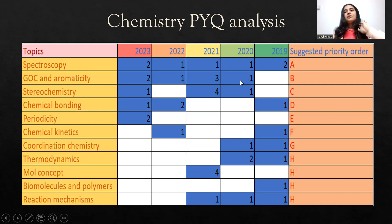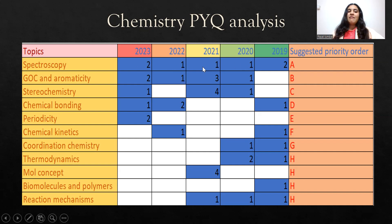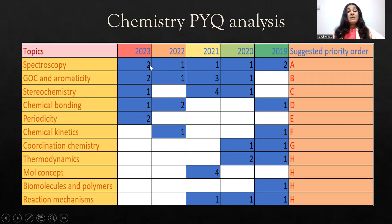In 2022 one question from spectroscopy was asked, and in 2021 similarly. We can see a continuous trend — in every year's IIT JAM Biotechnology paper they do ask a question from spectroscopy. So in 2024 you can also expect a question from spectroscopy.